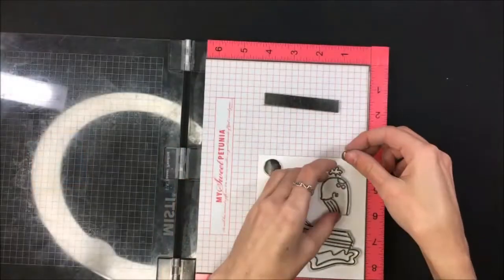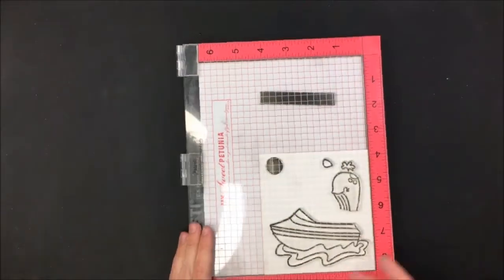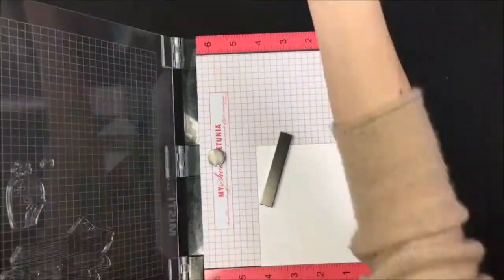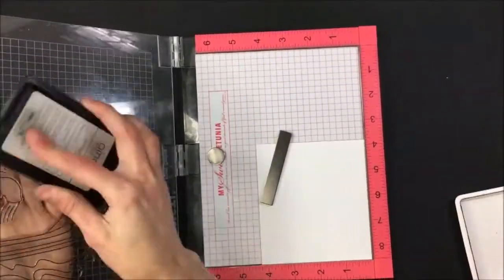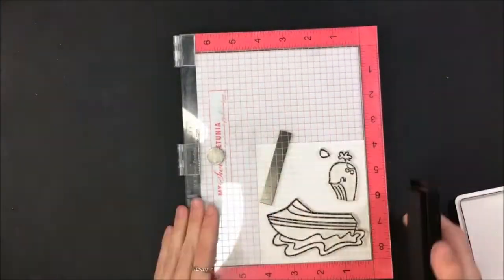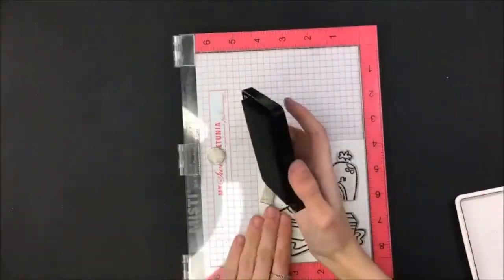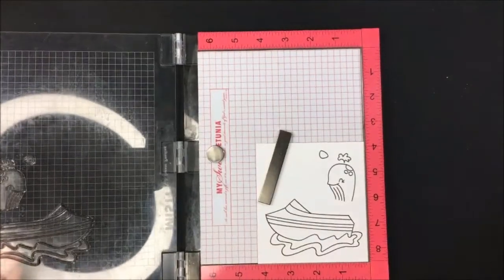So once that's done I'm going to do this stamping and I've just got the boat, the whale, and the whale's little fin set up in my MISTI. I'm going to use some Gina K amalgam ink because we are going to be Copic coloring these, and as always I do stamp it down twice to make sure I get a good impression.